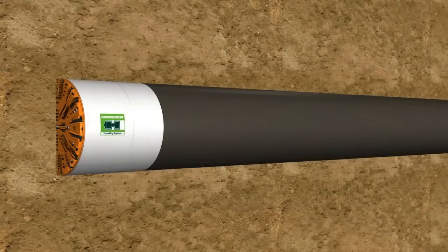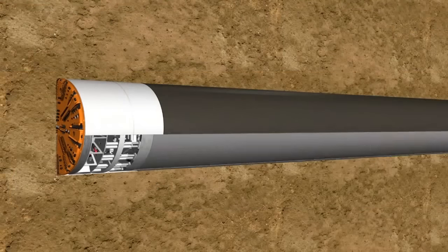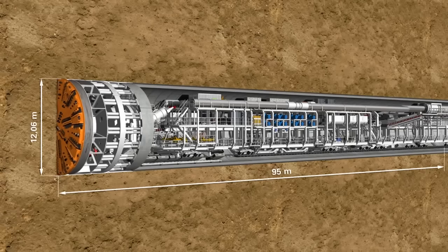The S442 is a classic EPB machine with an outer diameter of 12.06 meters and a total length of 95 meters.